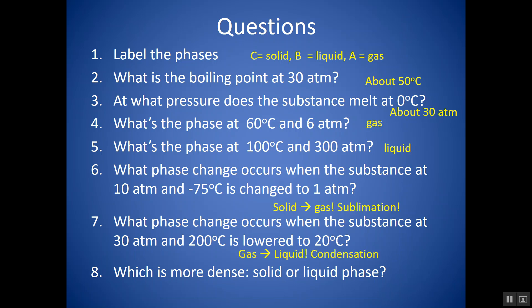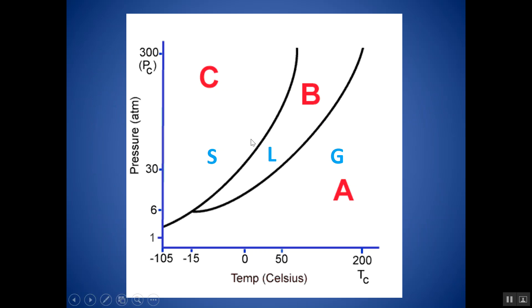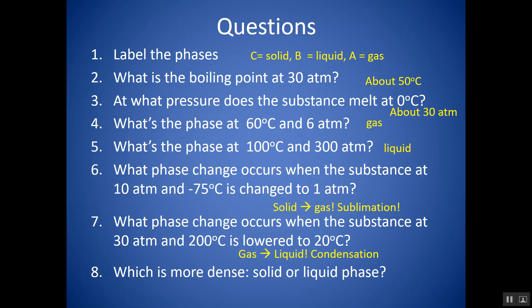Which is more dense — solid or liquid phase? Looking at how the solid-liquid line leans: this line leans to the right. You can either memorize what that means or pick a point on the line, increase the pressure, and see what phase you turn into. Increasing pressure here produces solid, so solid must be more dense. Whenever that line leans to the right, solid is going to be more dense.